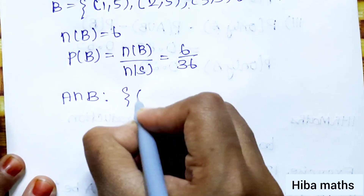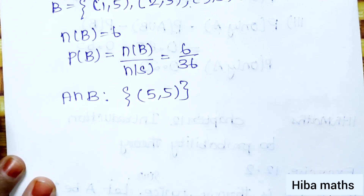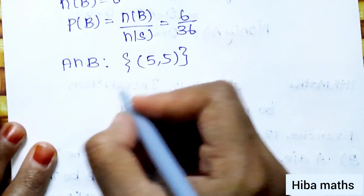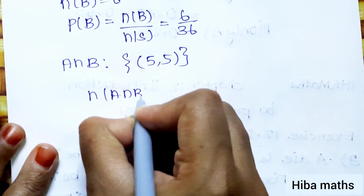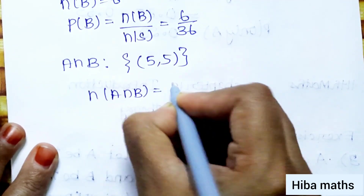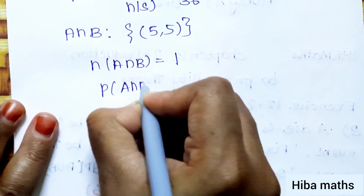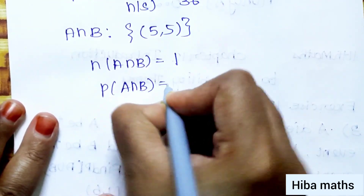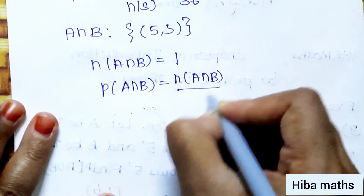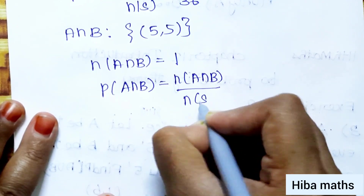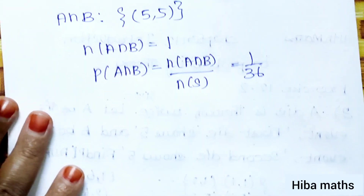Now for A intersection B — the only outcome where both dice show 5 is 5,5. So N of A intersection B is equal to 1. Therefore P of A intersection B equals N of A intersection B by N of S, that is 1 by 36.